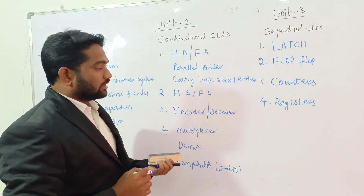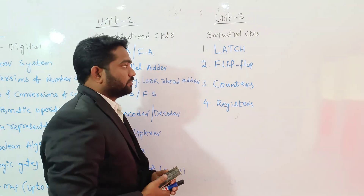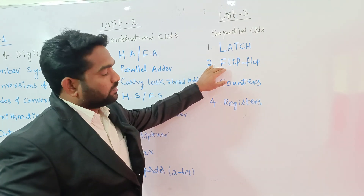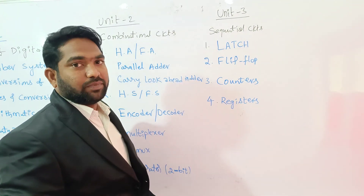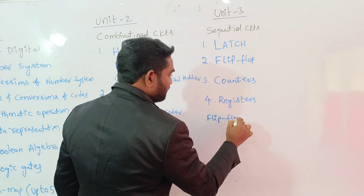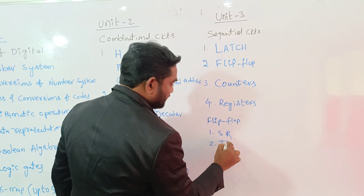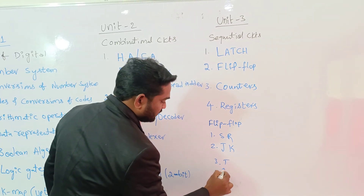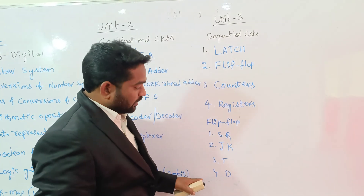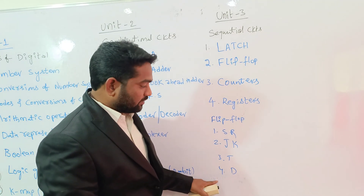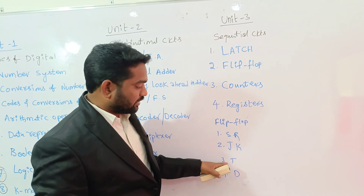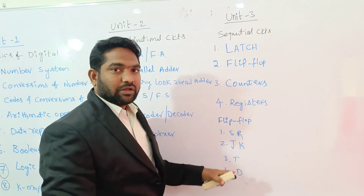In the flip-flop topic there are basically four types. The first is SR flip-flop (Set-Reset flip-flop), the second is JK flip-flop, the third is T flip-flop (Toggling flip-flop), and the fourth is D flip-flop (Data flip-flop). In the flip-flop concept we are going to learn the circuit diagram, truth table, excitation table, and conversions between flip-flop types — SR to JK, JK to T, T to D, D to T, T to JK, and JK to SR.